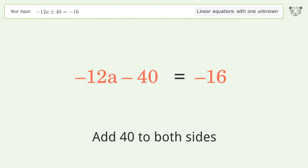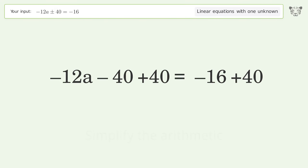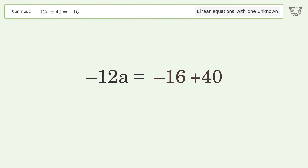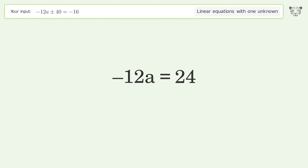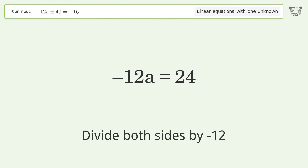Simplify the arithmetic. Then isolate a by dividing both sides by negative 12.